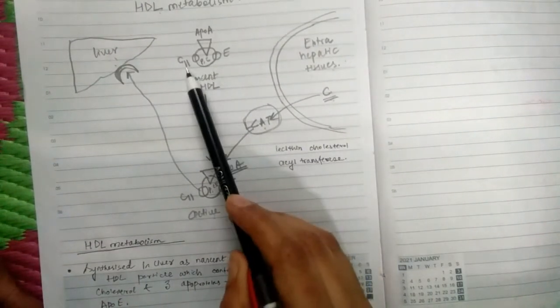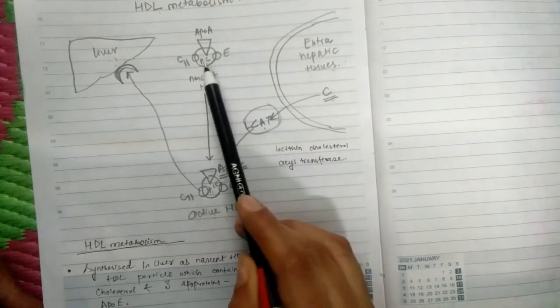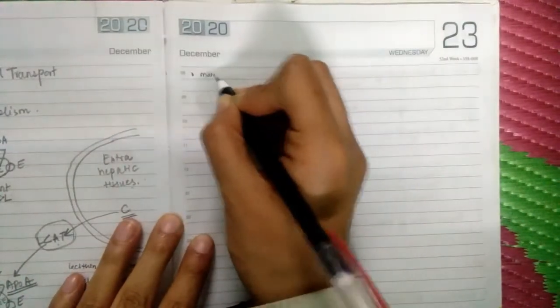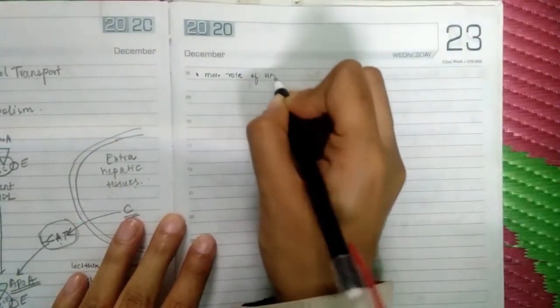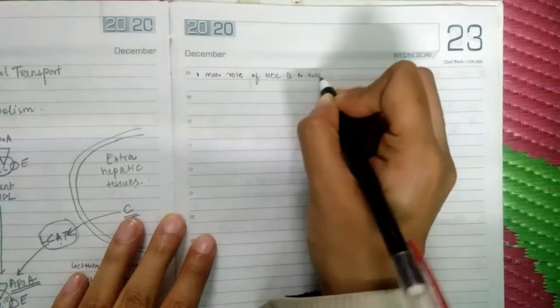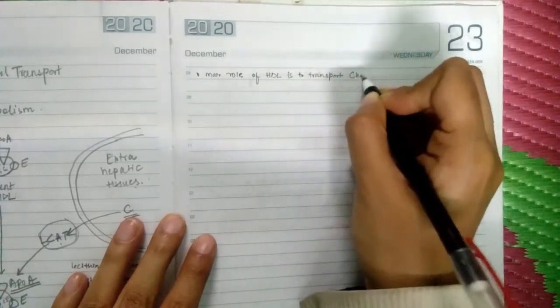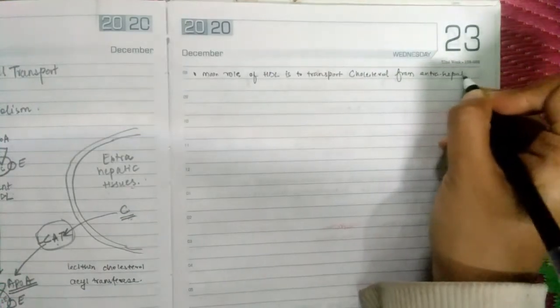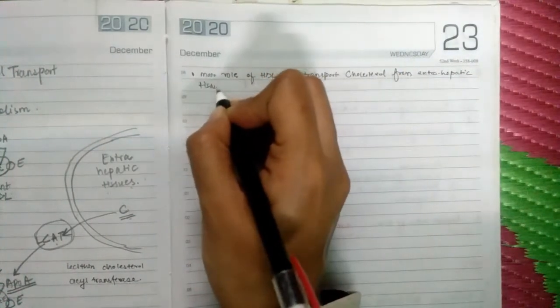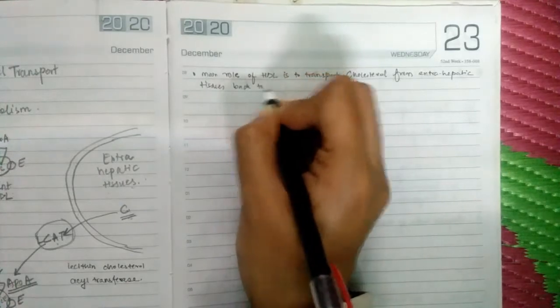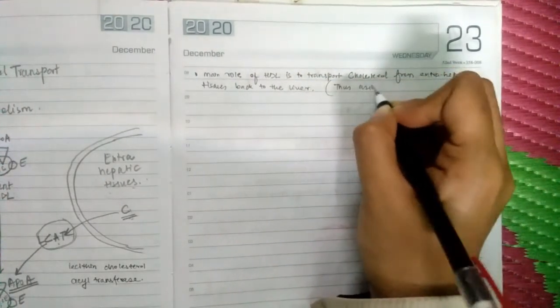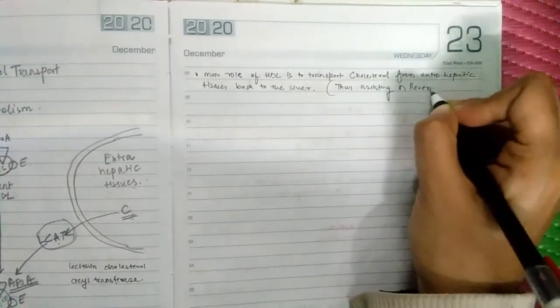As seen in the diagram, the nascent HDL molecule contains apoprotein C2, apoprotein A, and apoprotein E with phospholipids and cholesterol. The main role of HDL is to transport cholesterol from extra hepatic tissues back to the liver, thus assisting in reverse cholesterol transport.